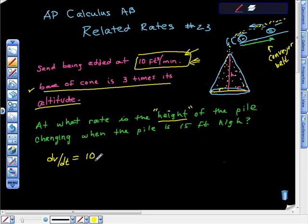The diameter of the base of the cone is approximately three times its altitude. At what rate is the height of the pile changing when the pile is 15 feet high?